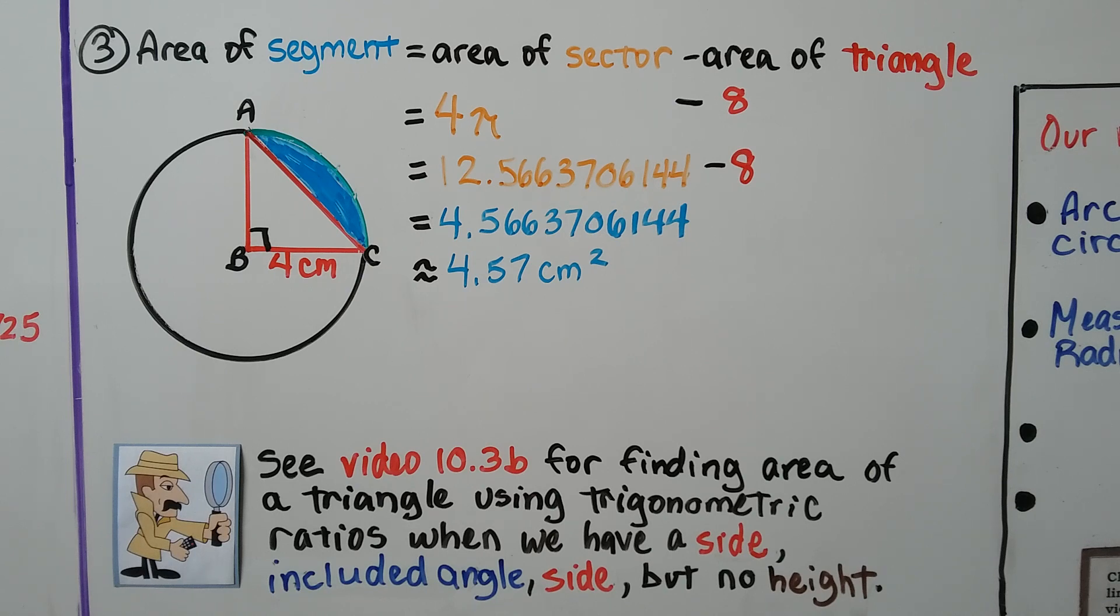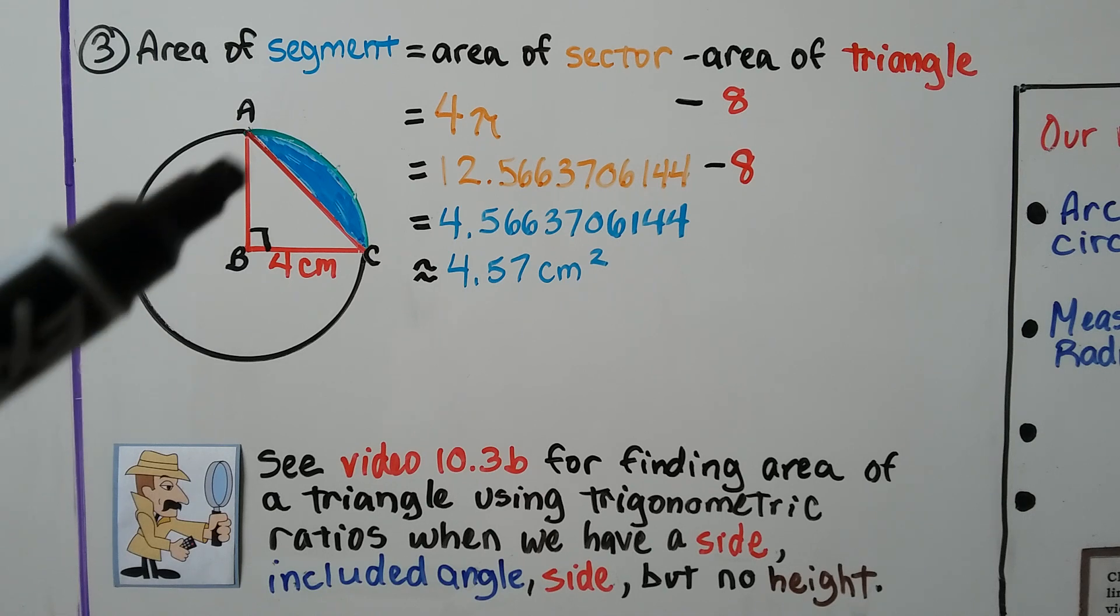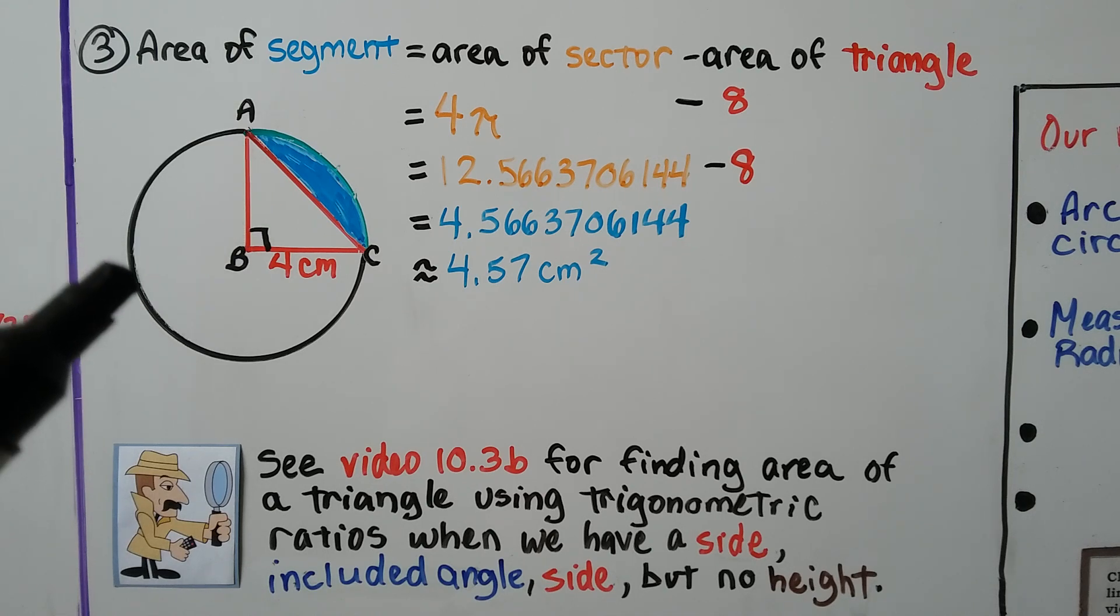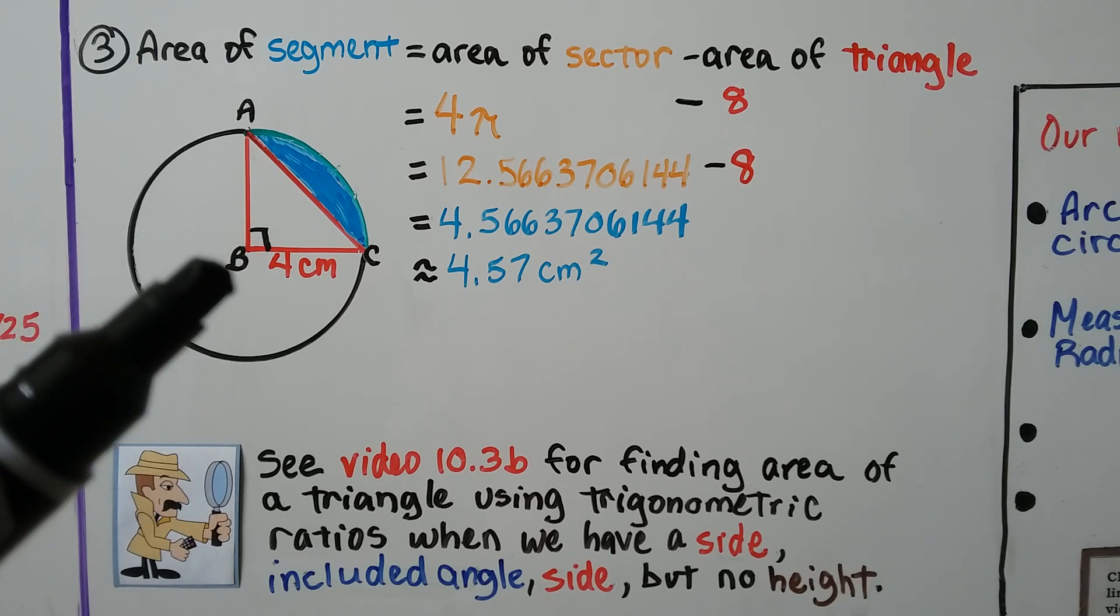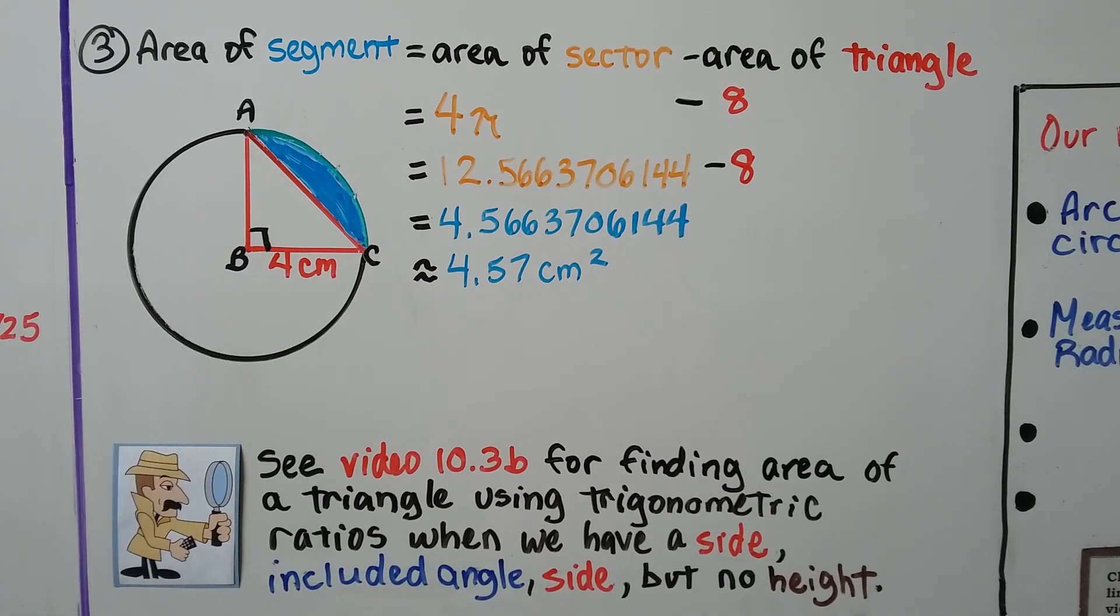Now you're going to come across some problems where there's not going to be a height and all you have is a side and an included angle and a side. And if you go back to video 10.3b, that was for finding area of a triangle using trigonometric ratios when we have a side included angle and side, SAS, but no height. So that might help you if you don't remember how to do that.